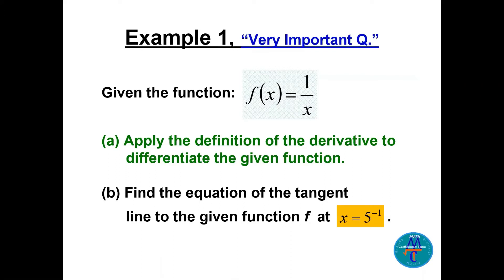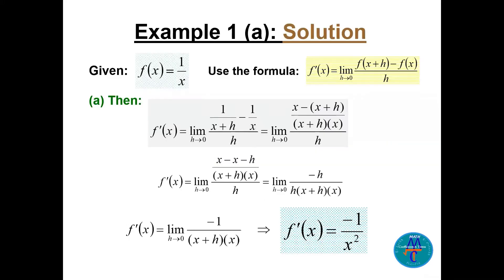Example: given f(x) = 1/x, apply the definition of the derivative to differentiate the function. For part b, find the equation of the tangent line to the function at x equals 5 to the power of minus 1. Let's apply the four-step process.